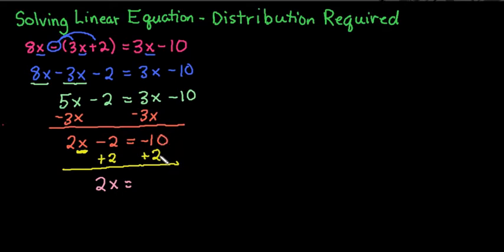Since the signs are different, remember that in math, difference means subtraction. So since they're different, we are going to subtract, so 10 minus 2 is 8. And then I would keep the sign of the larger number. Since 10 is larger than 2, I would keep this as a negative. Our last step to get x completely by itself is to divide by 2. So we end up with x equals negative 4.